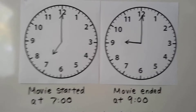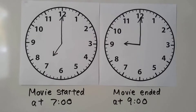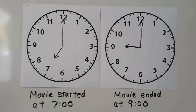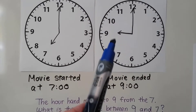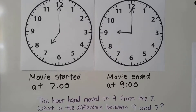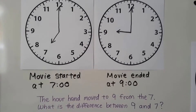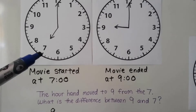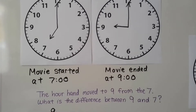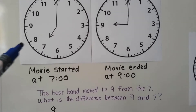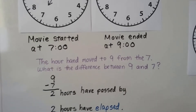Here we have a clock. The first clock shows the movie started at seven o'clock, and the second clock shows the movie ended at nine o'clock — the hour hand moved from the seven to the nine. We ask ourselves: what is the difference between nine and seven? We can count hops: one, two. We know each number is an hour, so that's two hours. Nine minus seven is two — two hours have passed.